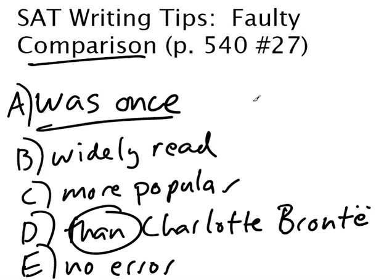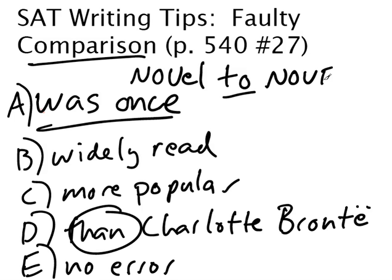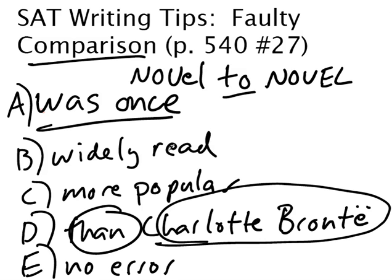Let's think about what we're comparing here. The novel Pride and Prejudice by Jane Austen was once more widely read and was more popular. So what are we comparing the novel to? Well, if we're comparing a novel to something else, that other thing should also be a novel — we can only compare two things of the same nature. What they're doing in this question is comparing the novel Pride and Prejudice by Jane Austen to Charlotte Brontë — the person, the author. You cannot compare a novel to a person; you have to compare a novel to a novel. So in this case, the answer is D.